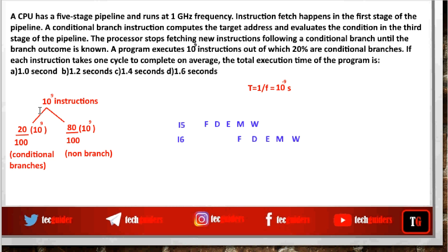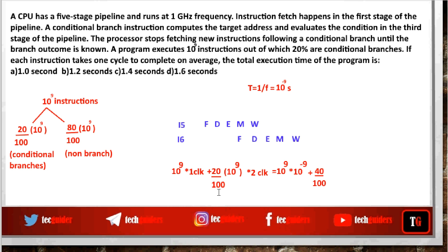All 10^9 instructions take 1 clock cycle, plus 20% of 10^9 instructions take 2 extra clock cycles. The clock time period is 10^-9 seconds. So the total execution time is: 10^9 × 10^-9 seconds, plus (20/100) × 2 × 10^9 × 10^-9 seconds, which equals 1 + 0.4 = 1.4 seconds. The answer is C.